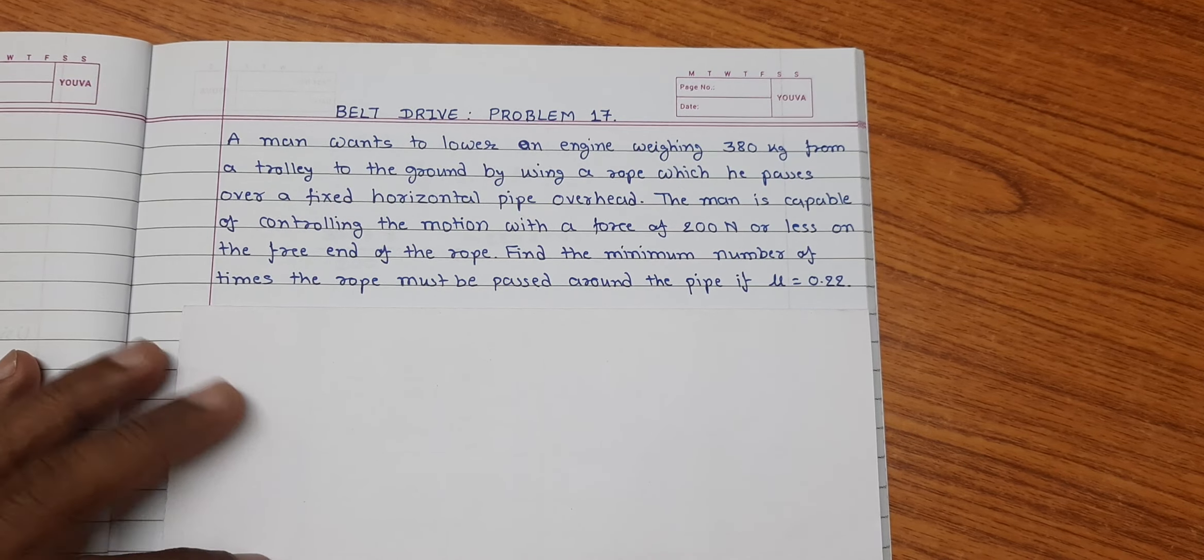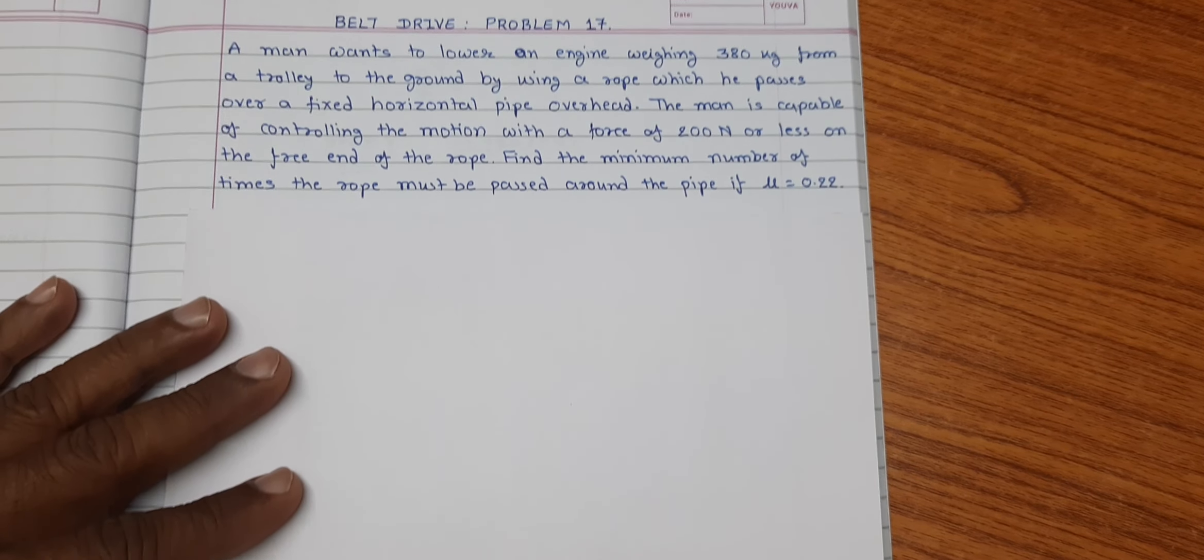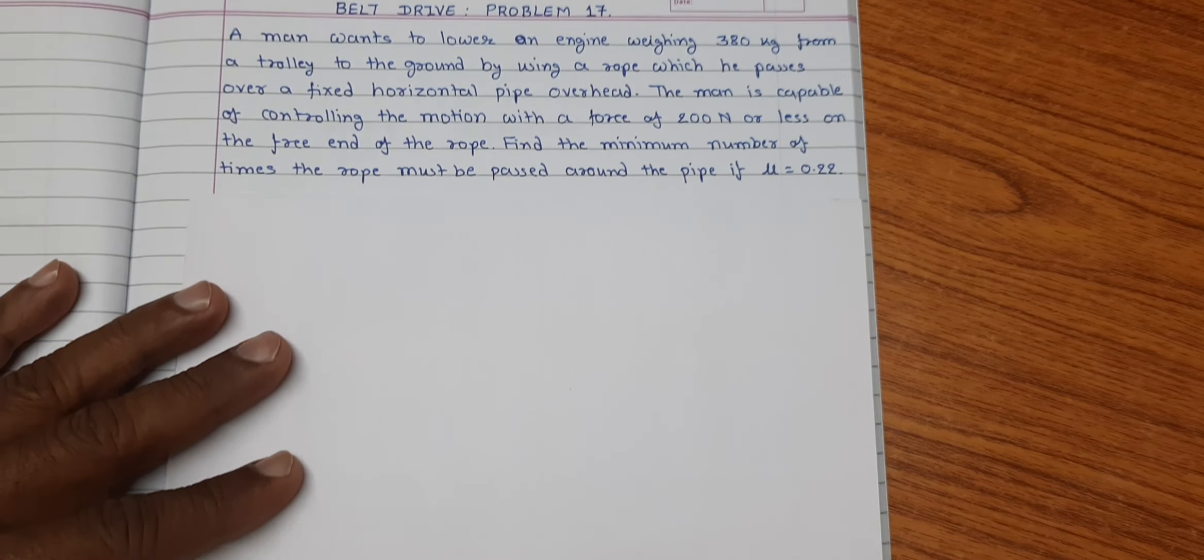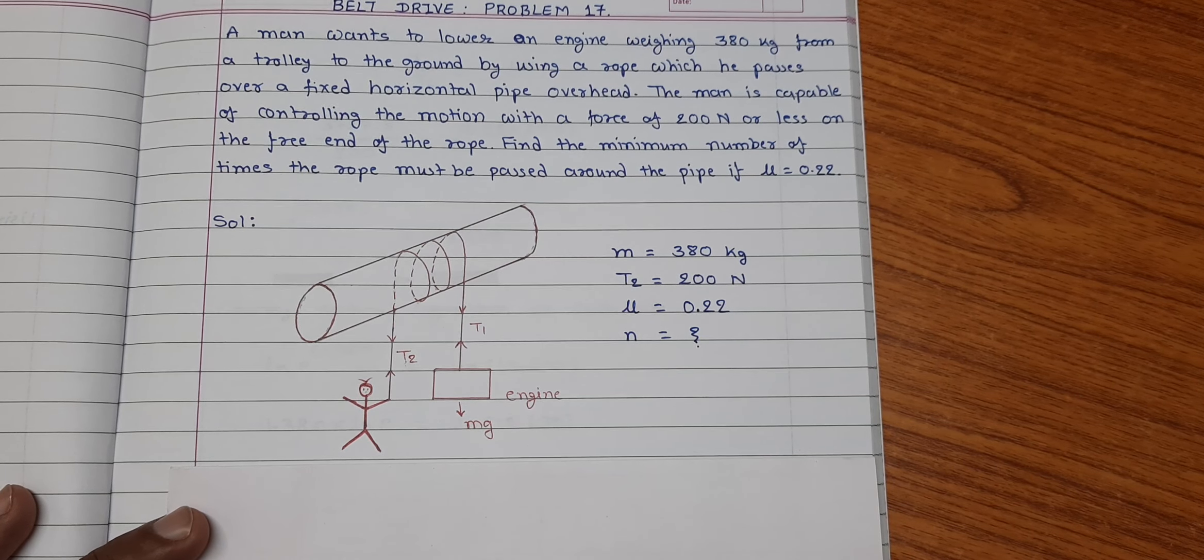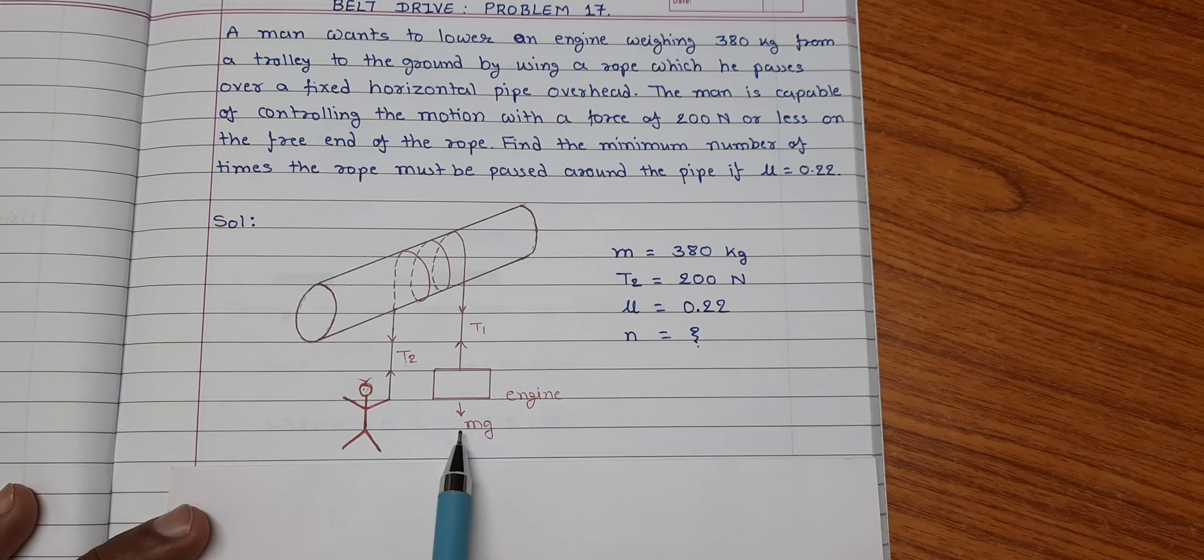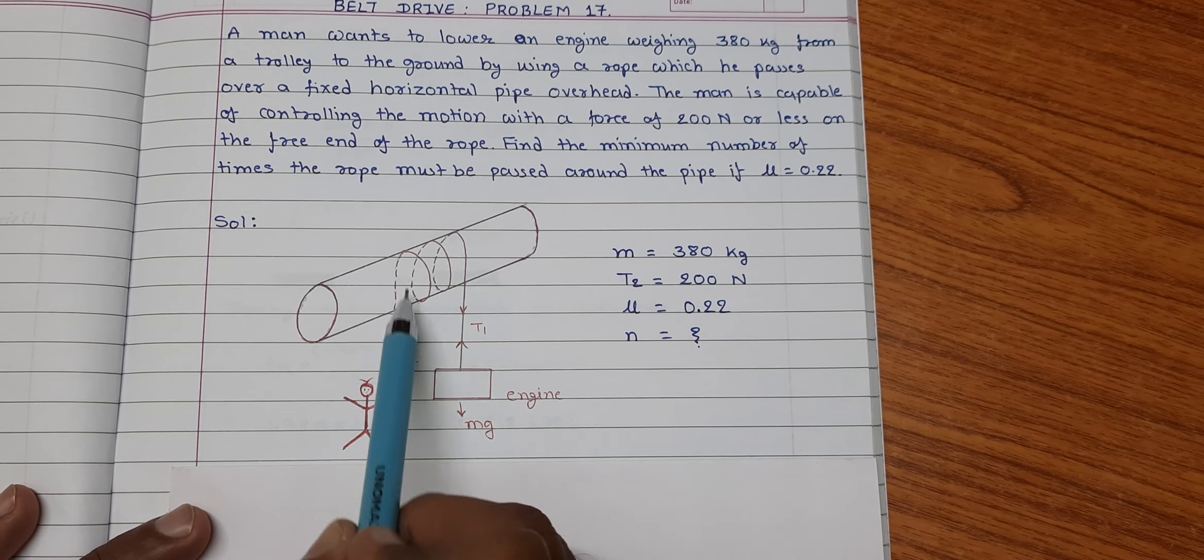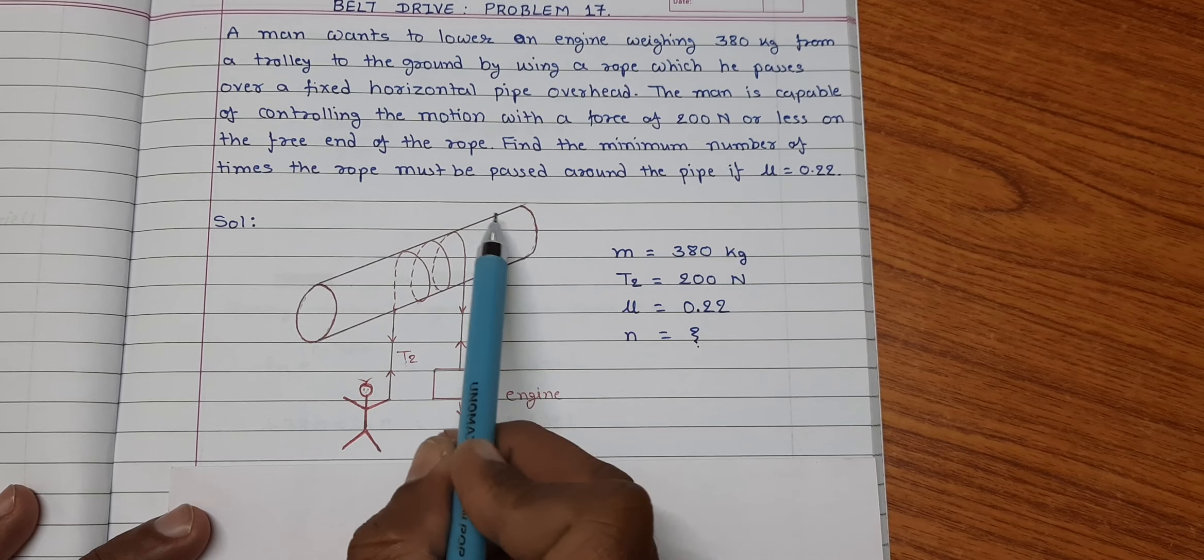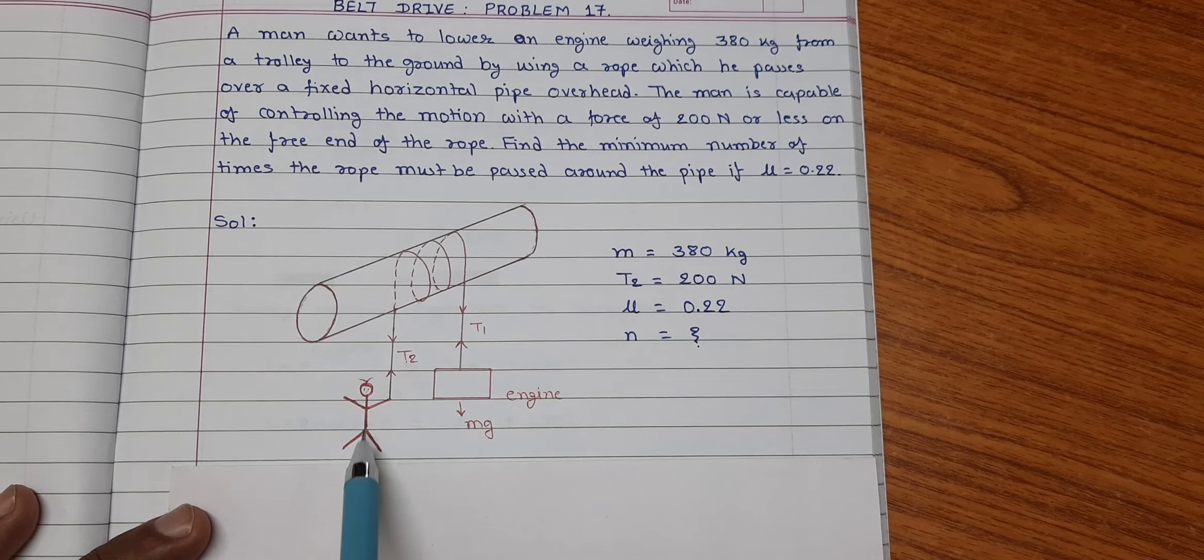Friends, let us first prepare a diagram for the given situation so it can be easily understood and solved. Here this engine is to be lowered from a trolley to ground and a rope is used which is passed over a circular horizontal pipe and the free end is handled by a man.